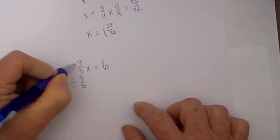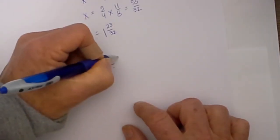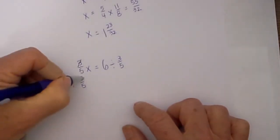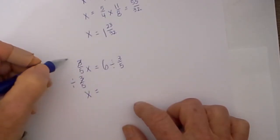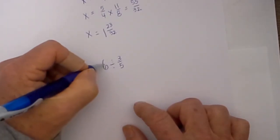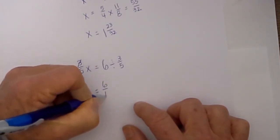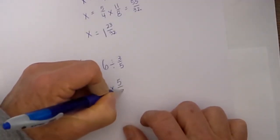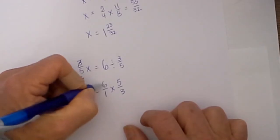So now what I do to one side I must do to the other. So I will go 6 divided by 3/5. The 3/5 cancel. So x equals 6 divided by 3/5. Well I am going to use my keep change and flip rule. So I am going to put 6 over 1, change the sign and flip the last fraction. So now I just multiply straight across.